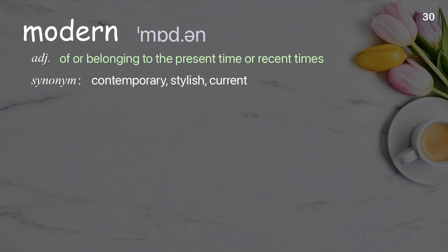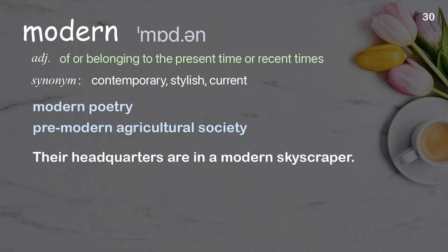Modern: Of or belonging to the present time or recent times. Examples: Modern poetry. Pre-modern agricultural society. Their headquarters are in a modern skyscraper.